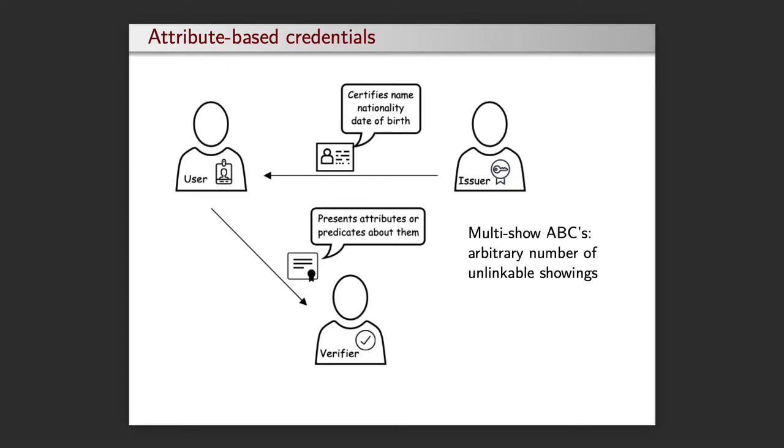Anonymous ABCs allow user authentication without leaking any other information besides the shown attributes. Some systems can be multi-show, which means that they allow an arbitrary number of unlinkable showings. In other words, once issued, credentials can be reused.